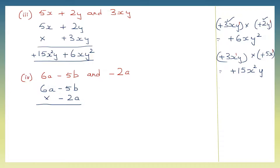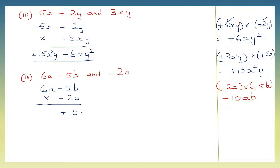We take minus 2a and multiply it with minus 5b and then with 6a. Let's put them in brackets because we have minus signs — this is only to make it easy for us. First let's multiply the signs: minus into minus is plus. Then the numbers: 2 into 5 — two fives are 10. Then the literal coefficients: a into b is ab. So plus 10ab. This is the first part.